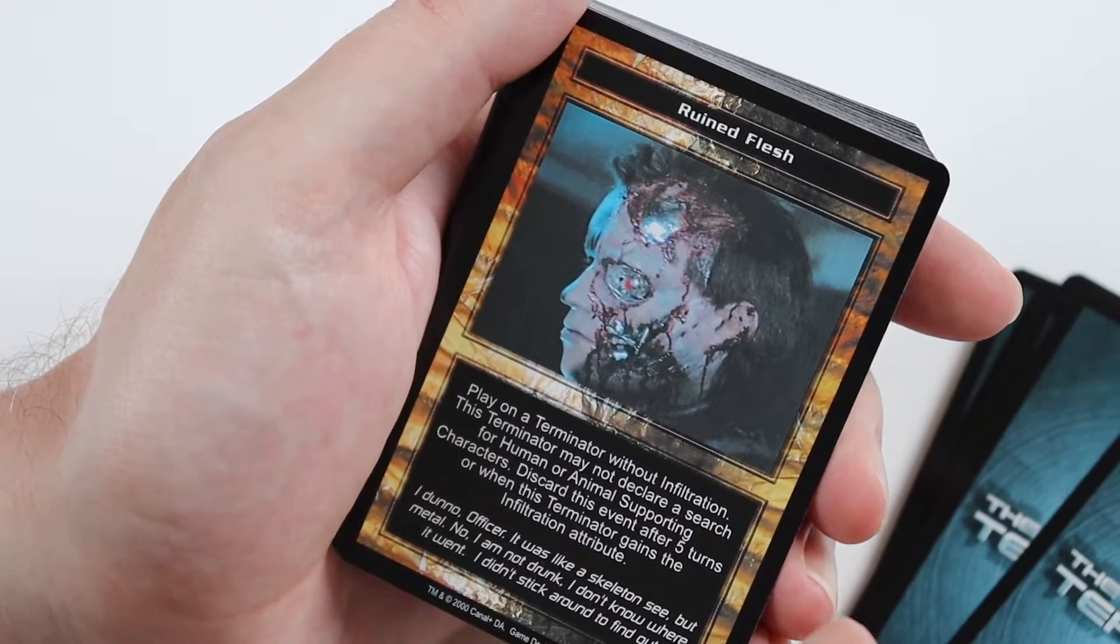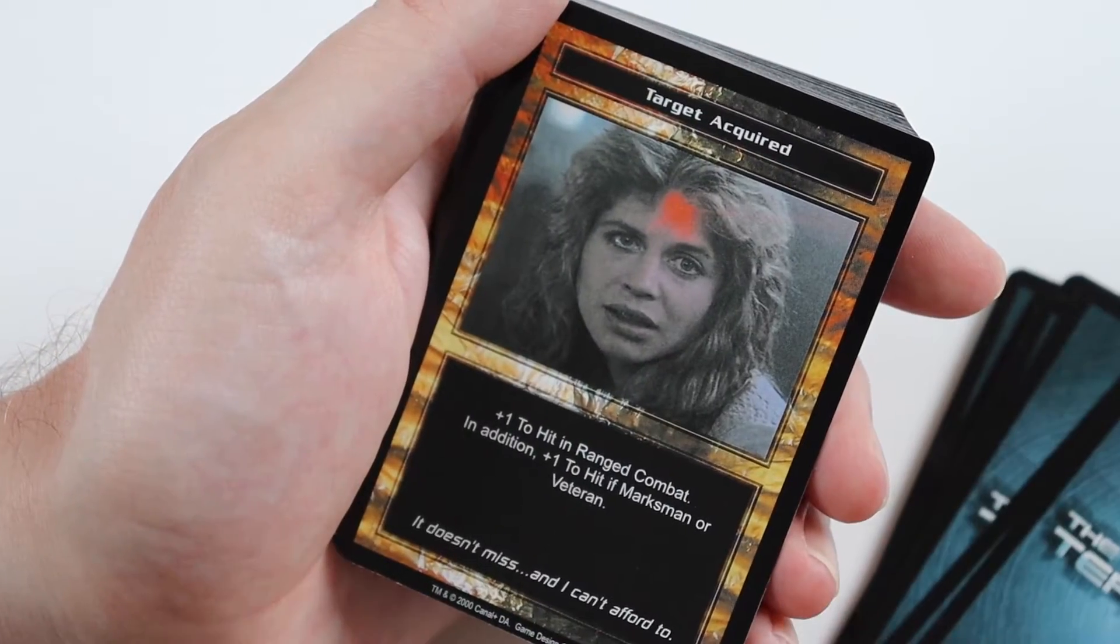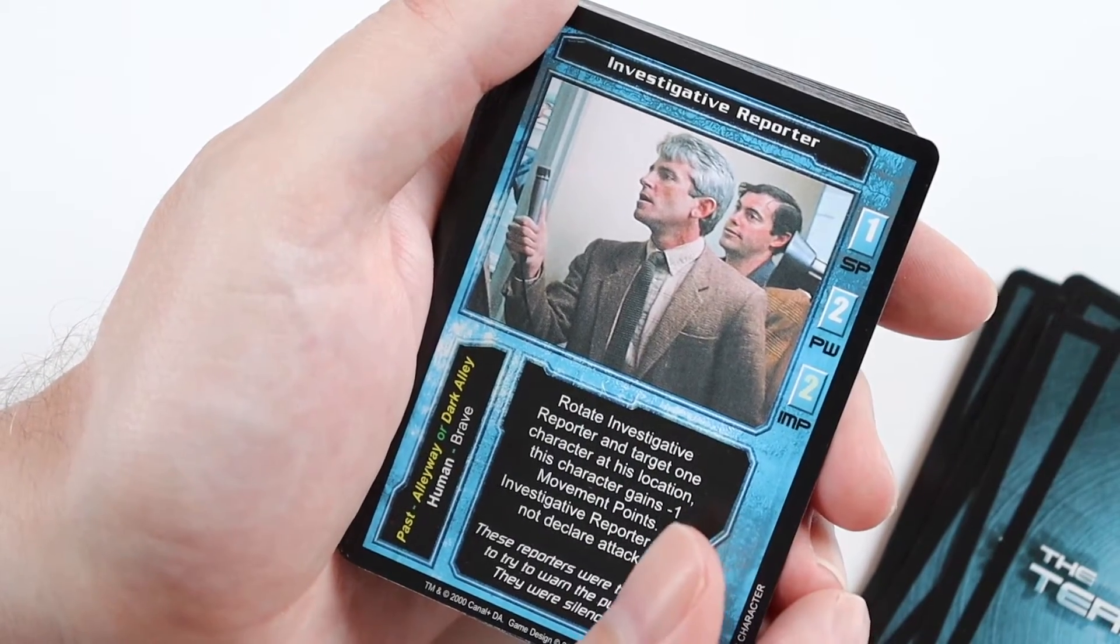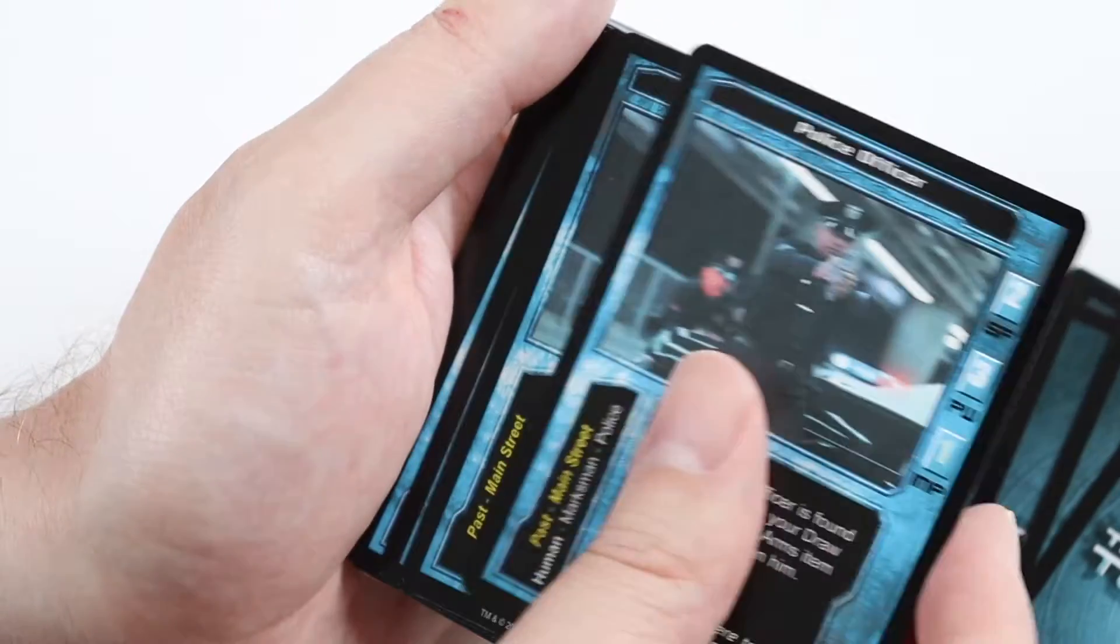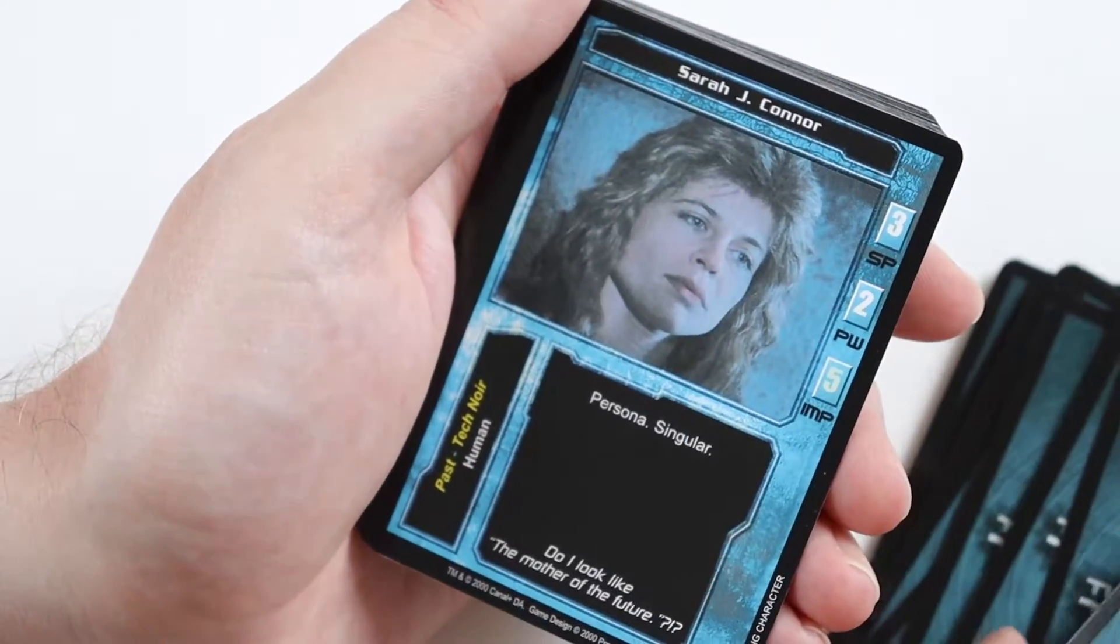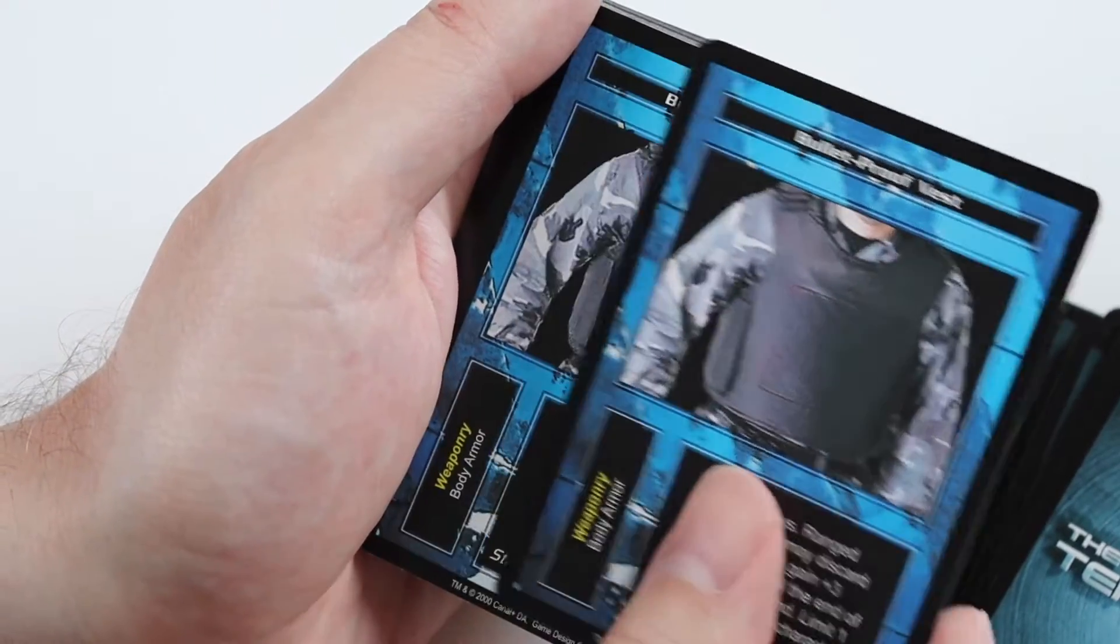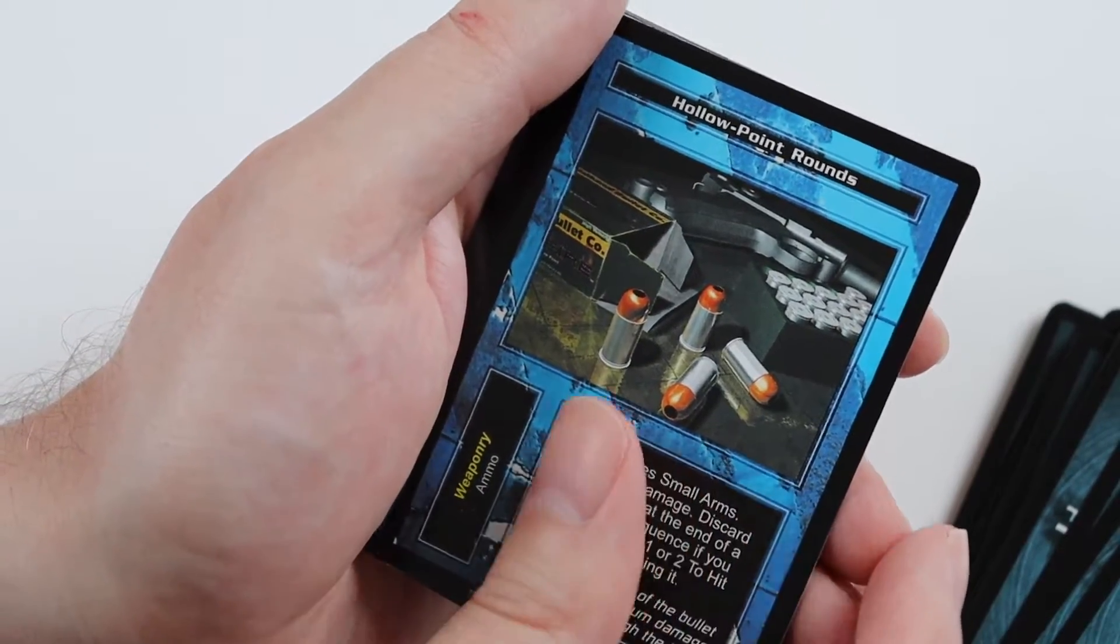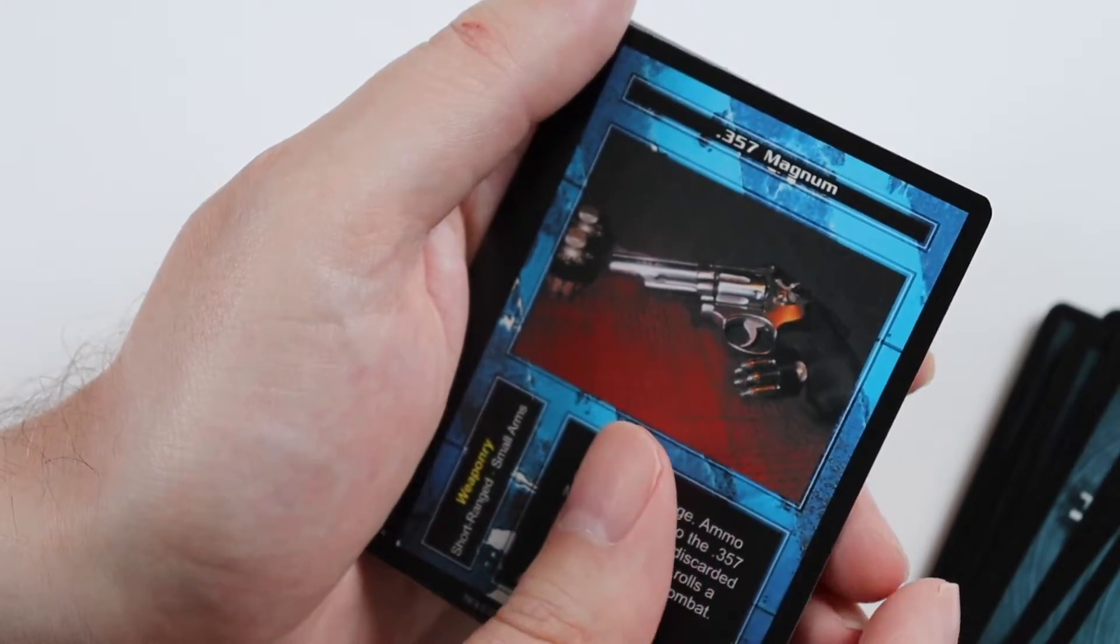Field dressing. Ruined flesh. Mistaken identity. Target acquired. Phone book. Investigative reporter, two of those, three of those. Police officer, three of those. Garbage man. Sarah J Connor. Bulletproof vest. Man stopper. High point rounds. Remington 870. 0.357 magnum, two of those.